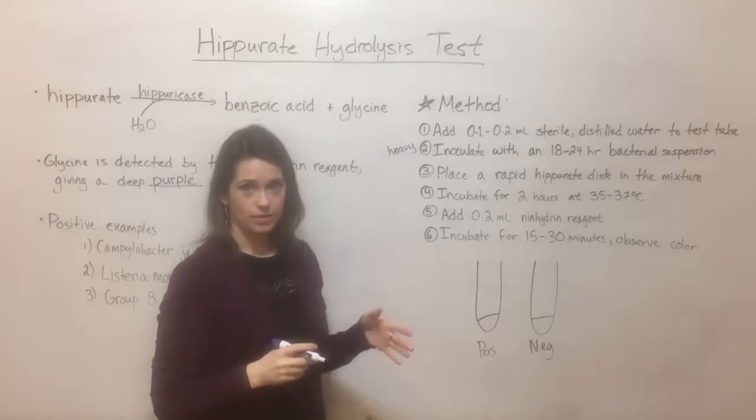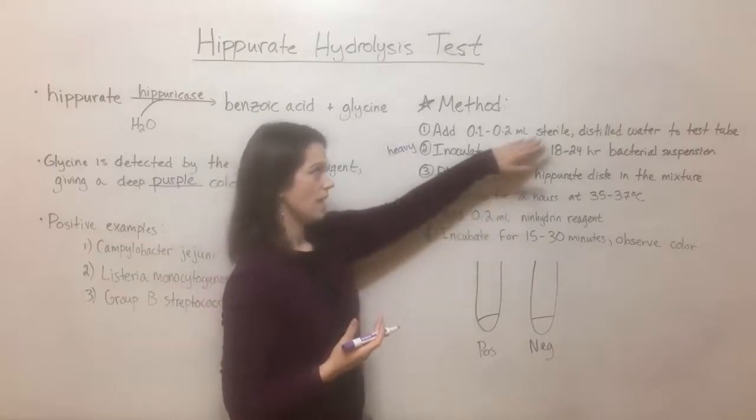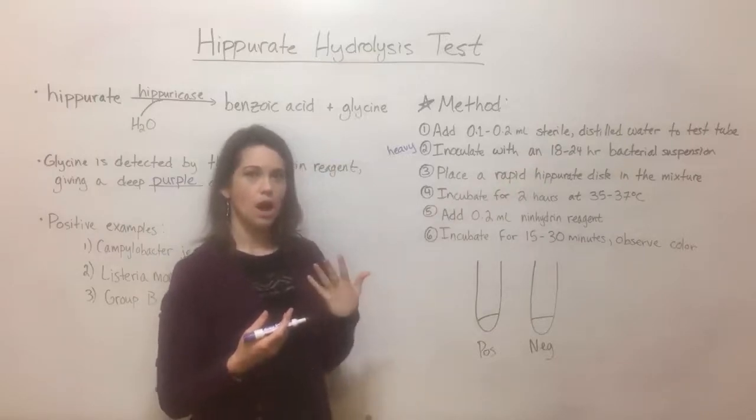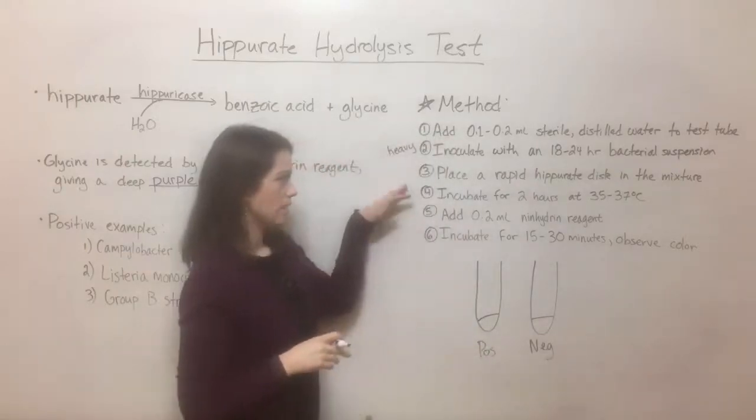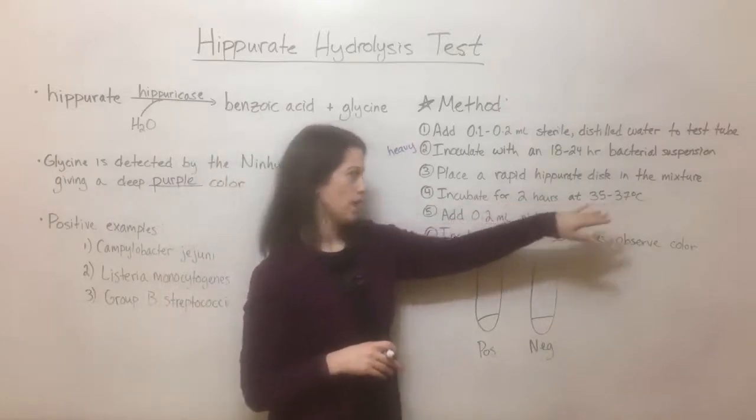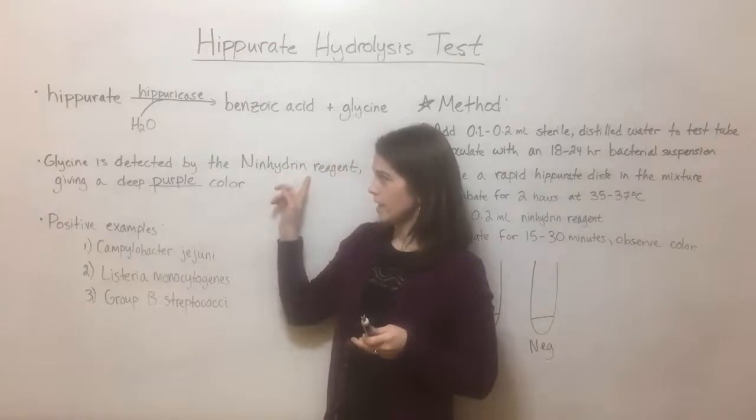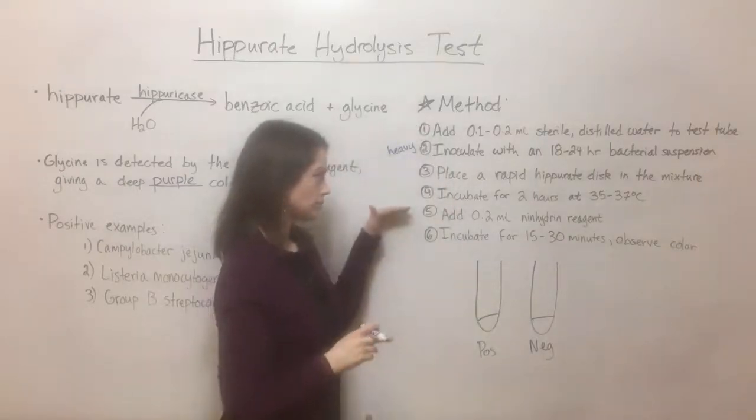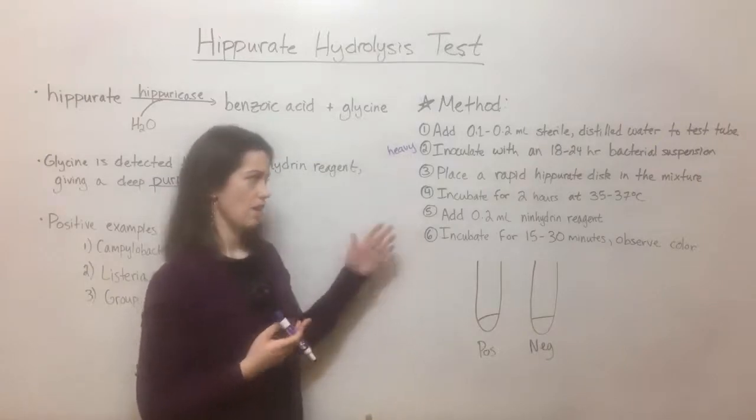You're supposed to have this 18 to 24 hour bacterial suspension. This means that bacteria are in that exponential growth phase. They're very healthy and happy and growing rapidly. And so you take a pretty heavy amount of that suspension and inoculate it into the tube. Then you place a rapid hippurate disc. This is just a sterile disc that has hippurate on it into this mixture. So at this point, all the mixture has is the bacterial suspension and whatever enzymes those bacteria have, as well as sterile distilled water and a rapid hippurate disc. So there's no other possible source of glycine, which means that when the ninhydrin reagent is added, which happens after an incubation, so you're incubating not even for a very long period of time, just a couple of hours at pretty close to human body temperature, then you add this 0.2 milliliter ninhydrin reagent.